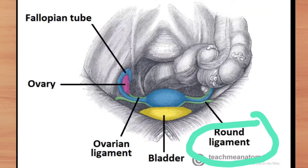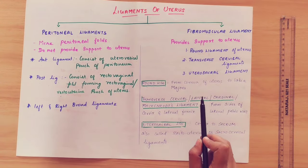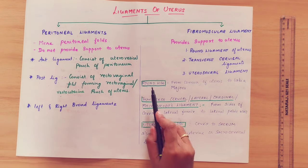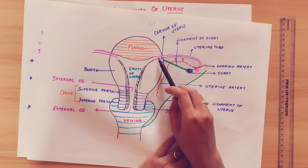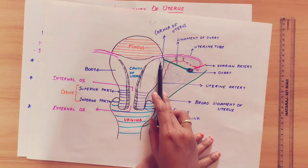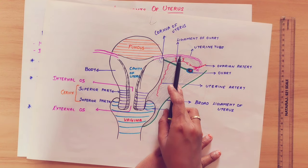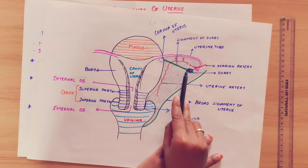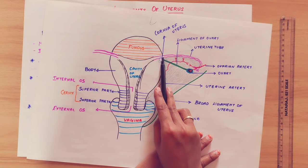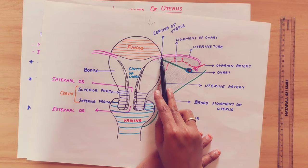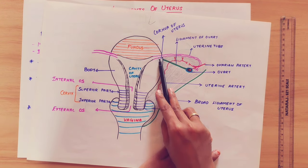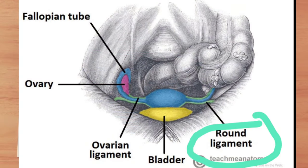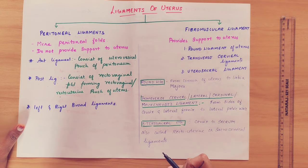The round ligament extends from the superolateral angle (corner) of the uterus, near the uterine tube and the ovary ligament, down to the labia majora. This is the round ligament of the uterus.